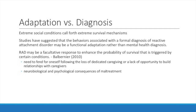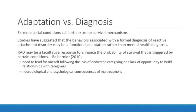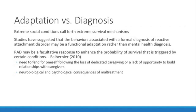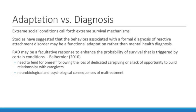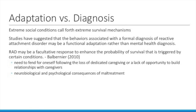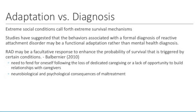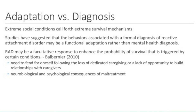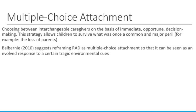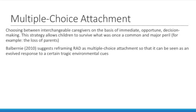It has been suggested that the behaviors associated with a formal diagnosis of Reactive Attachment Disorder may stem from a functional adaptation rather than a mental health diagnosis. The Balberny article suggested that RAD may be a facultative response to enhance the probability of survival, triggered by certain conditions — including the need to fend for oneself following the loss of dedicated caregiving, or a lack of opportunity to build relationships with caregivers, intermixed with neurobiological and psychological consequences of maltreatment. The article suggests reframing RAD as multiple-choice attachment, so that it could be seen as an evolved response to certain tragic environmental cues.